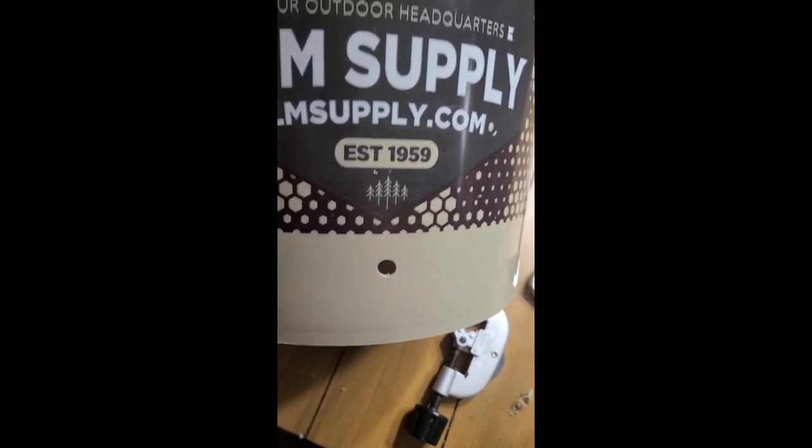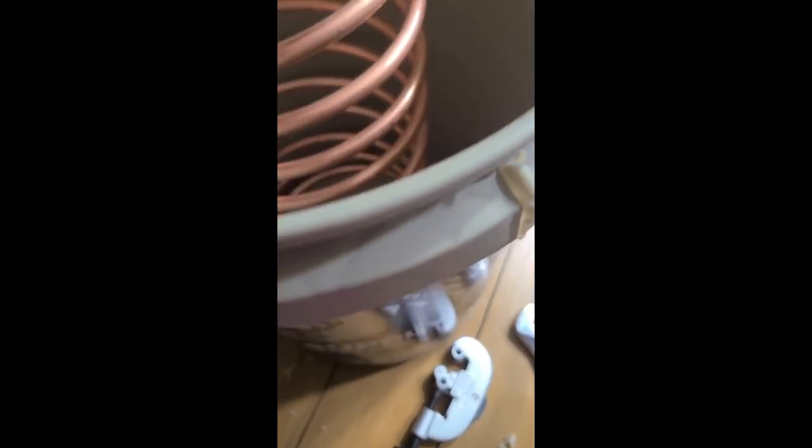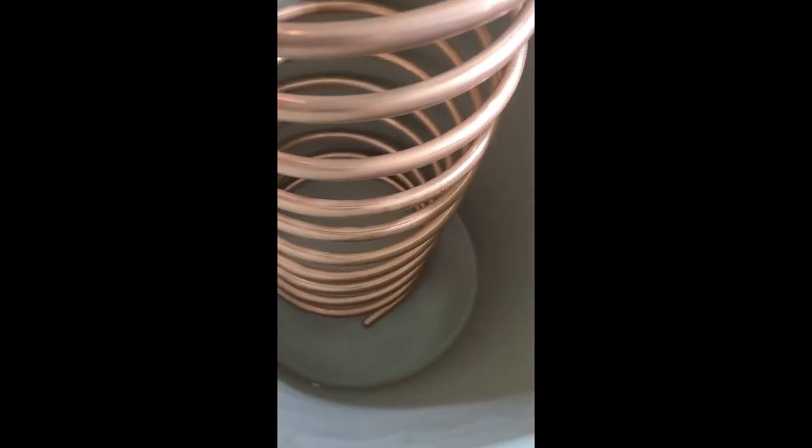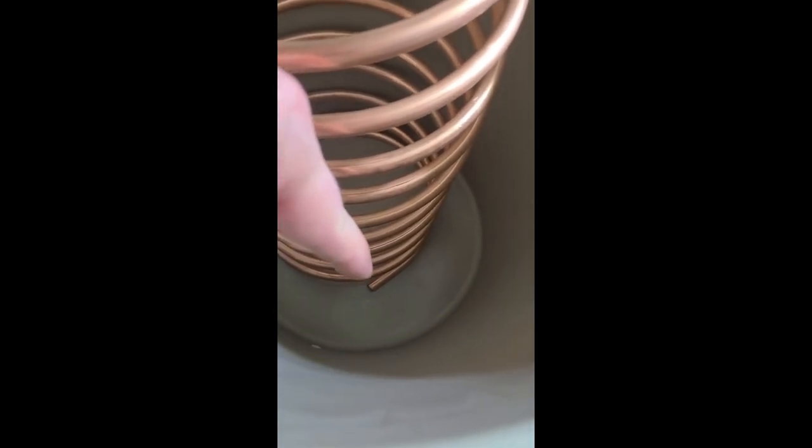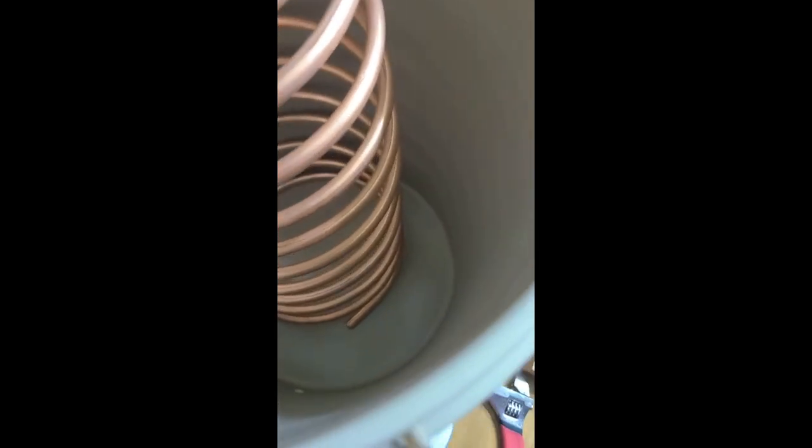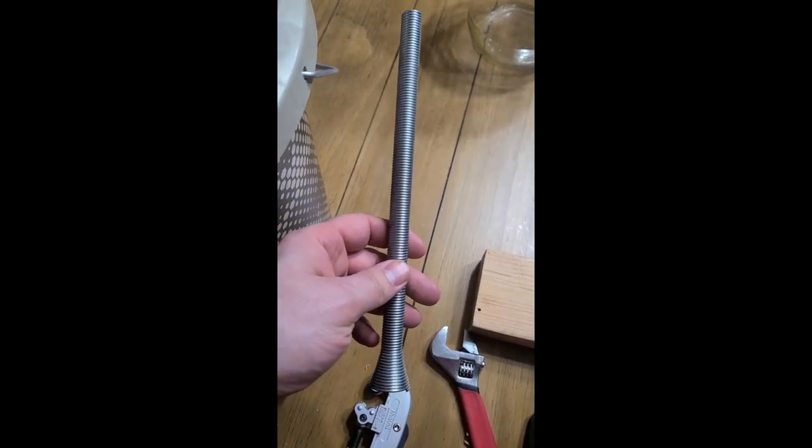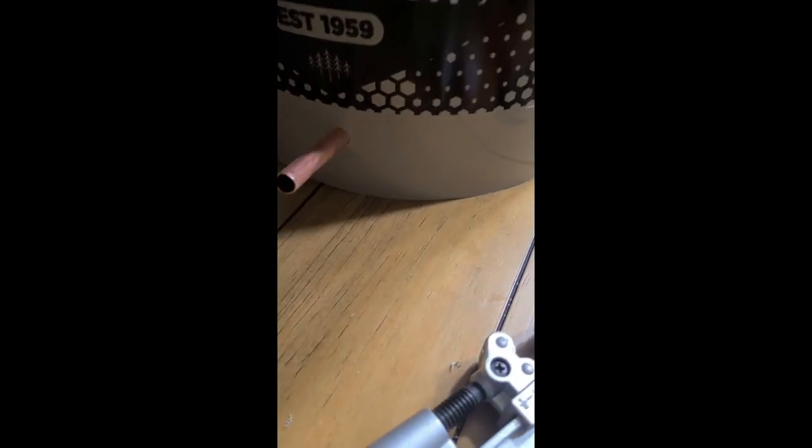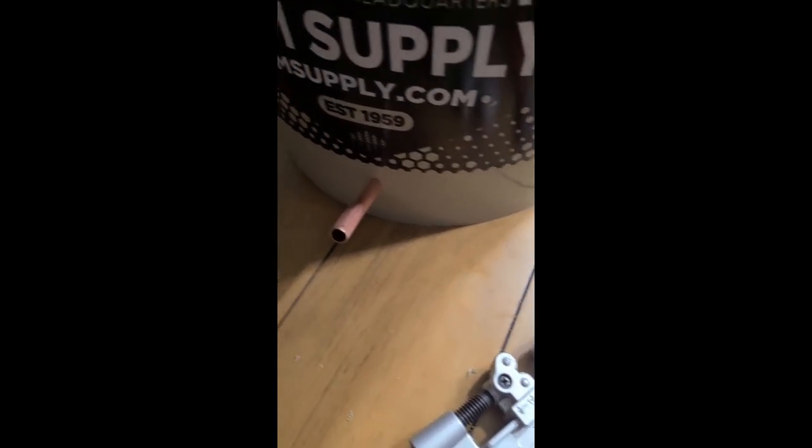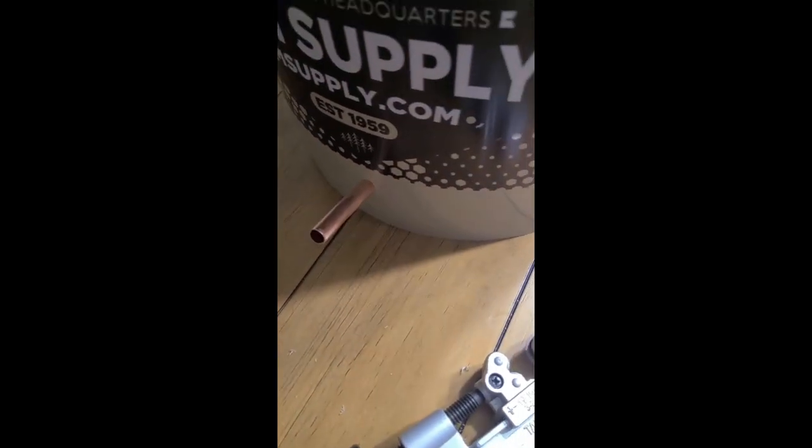So we got our hole drilled and now we'll need to straighten out the lower end of the condenser to fit it out the hole. You'll want to make sure you're using your pipe bender, otherwise your copper pipe will crimp. Okay, so it went through there nice and tight.